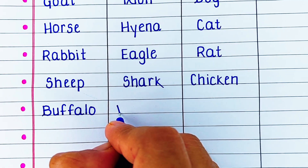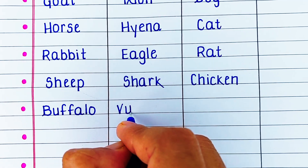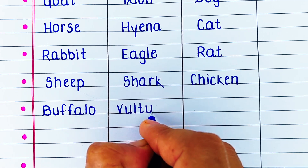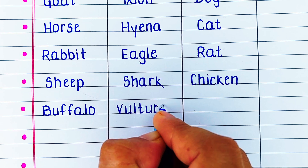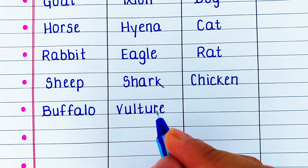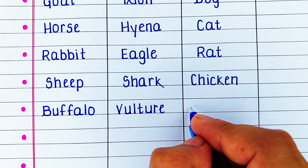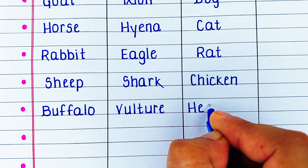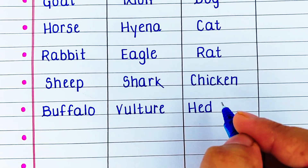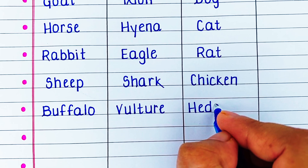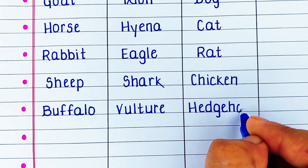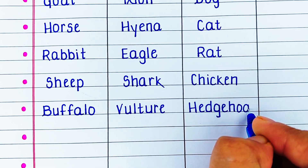Next herbivore in our list is buffalo. Carnivore is vulture. And omnivore is hedgehog.